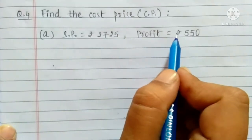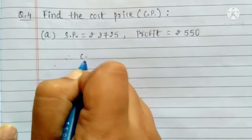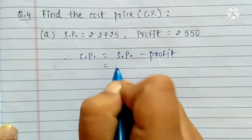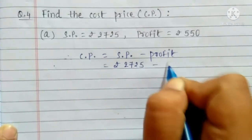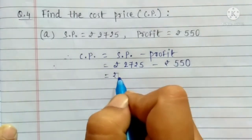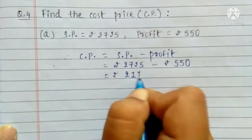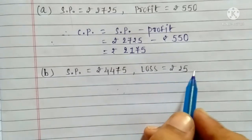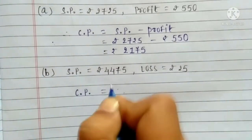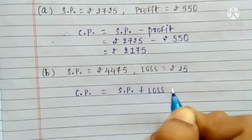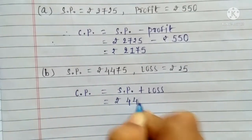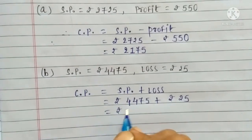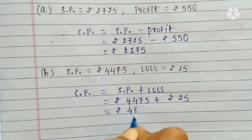Question no. 4: Find the cost price when selling price is equal to Rs. 2725 and profit is equal to Rs. 550. Cost Price = Selling Price − Profit. Also, find cost price when selling price is Rs. 4475 and loss is Rs. 25. Cost Price = Selling Price + Loss = 4475 + 25. On addition, we get answer Rs. 4500.